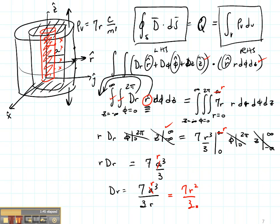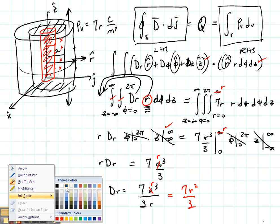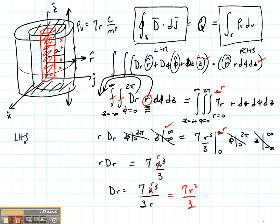Now take a look again. It does not matter what my charge distribution is. My left hand side always stays the same. So for all cases my left hand side which is the closed surface integral of D dot DS is going to be 2 pi R times the length of my cylinder. This is the length times DR. It's always going to be that.